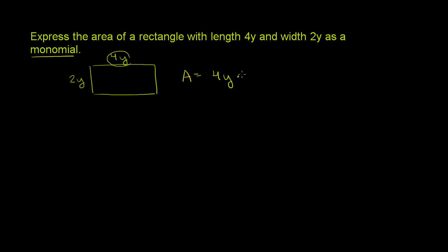So the area is going to be 4y times 2y. Now here, we can use the associative and commutative properties of multiplication to swap the order that we do this multiplying in.